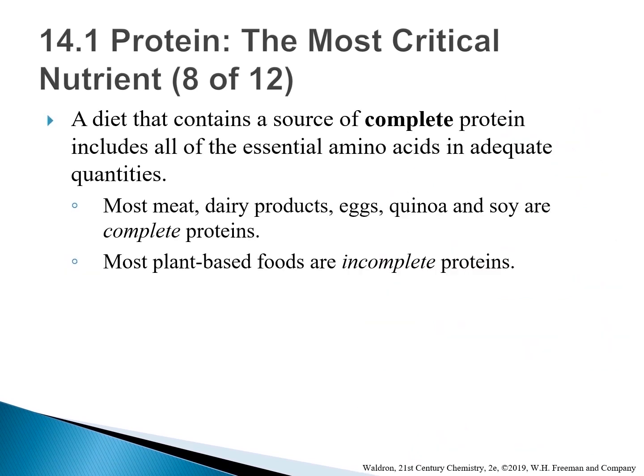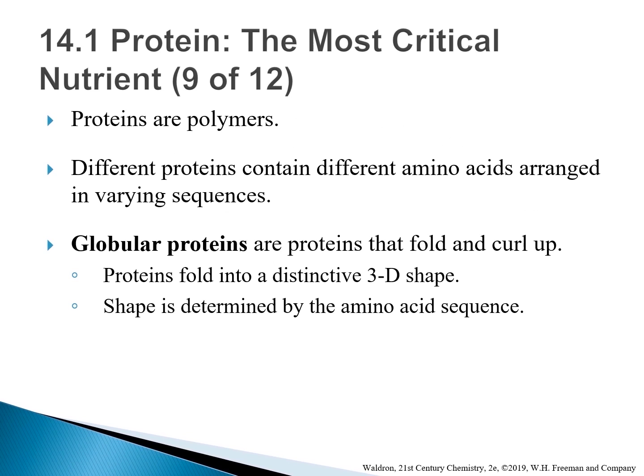When we say a diet should include a source of complete protein, we mean it should include all of the essential amino acids in adequate quantities. Most meat and meat products such as dairy, eggs, and soy are complete proteins, while most plant-based foods are incomplete proteins. Proteins are polymers that can be formed from any combination of the 20 amino acid building blocks, so an enormous number of different proteins are found in nature.